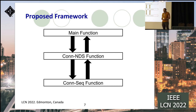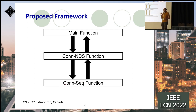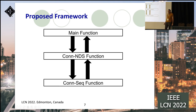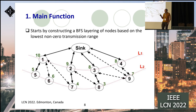Our proposed framework consists of three functions. The main function at the top of the hierarchy performs the slicing process and benefits from two supporting functions: the Connect Node Disjoint Sequence function and the Connect Sequence function. These supporting functions derive lower bounds for the reliability value of nodes before deciding whether they should join the slices.